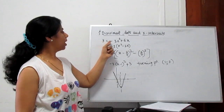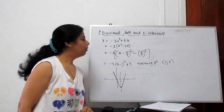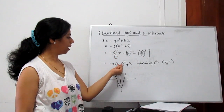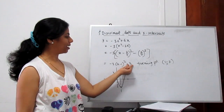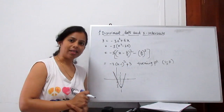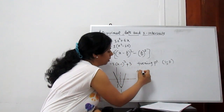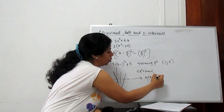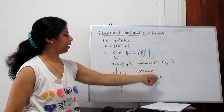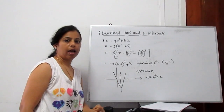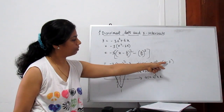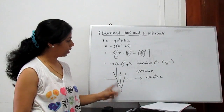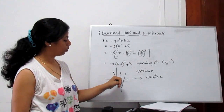Let's understand with a problem. Our given curve is y = −3x² + 6x. First, simplify and convert into a whole square. When we convert, we get h and k — our h is 1 and k is −3. This is called the turning point. Comparing with a(x − h)² + k, h and k are the turning point. From this, x = 1 is the line of symmetry.